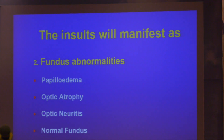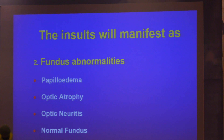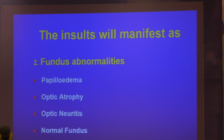Coming to the fundus, it can manifest as papilledema — it's a passive edema; the optic nerve is edematous because of some push, pull, or space-occupying accumulation in the brain. It's not active like optic neuritis. Papilledema is an alarming sign. Optic atrophy due to intracranial causes is also an alarming sign. Bilateral optic neuritis due to disseminated sclerosis is a warning sign. And even a normal fundus is not normal — it denotes something else in the brain.